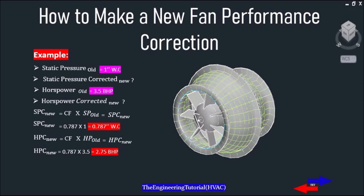Therefore, as altitude and temperature go up, air density changes: the static pressure decreases from 1 to 0.787 inches of water column, and the horsepower changes from 3.5 to 2.75 after increasing altitude and temperature. That's it for today — I appreciate you for watching this video.